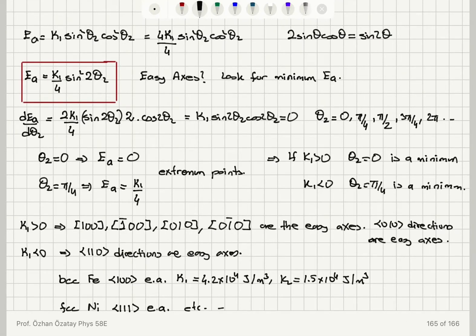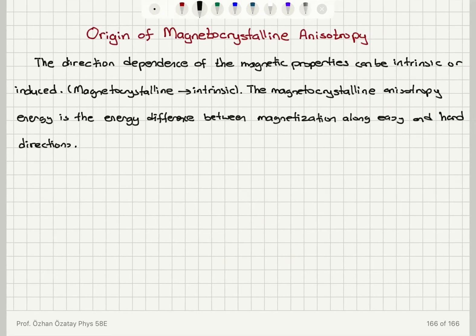For example, going back to our previous case: E_a equals 0, and E_a equals K₁ over 4. When K₁ is negative, this would be the minimum, and E_a equals 0 would be the maximum. So the anisotropy energy is referenced to 0, which is the hard axis energy, for example. We can talk about the anisotropy energy this way.